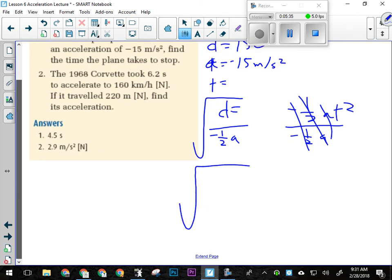So it's 150 meters, and that's a positive number, divided by negative 1/2 times the acceleration, which was also negative, negative 15. That's why that negative coming over is important.